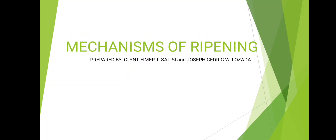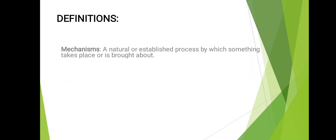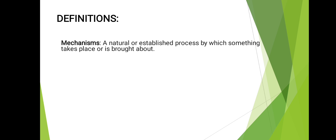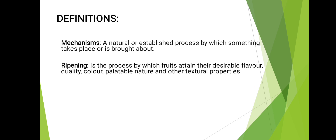Mechanisms of ripening. A mechanism is a natural or established process by which something takes place or is brought about. Ripening is the process by which fruits attain their desirable flavor, quality, color, palatable nature, and other textural properties.